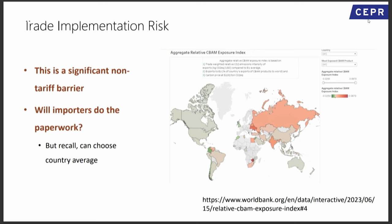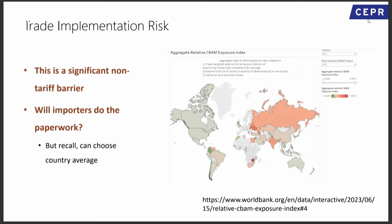Second concern: the latest World Bank analysis shows countries in Africa, including South Africa, and Russia will have very high exposure to CBAM. For those countries, especially South Africa, this might be a non-trade barrier — they might prefer not to export and not do the paperwork. And that's not what we want. So I think the design is quite good and it will probably expand, but the international dimension is the most complicated part.